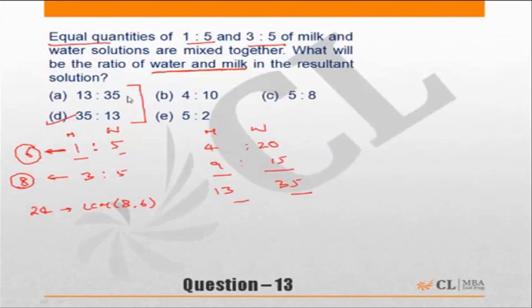In questions of ratio, there is a very common thing. You will find if the correct answer is 35:13, there is a 13:35 also given to confuse you and to make sure you mark your incorrect answer if you don't read the question carefully.